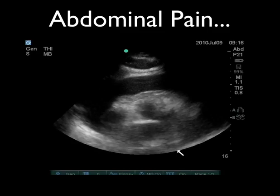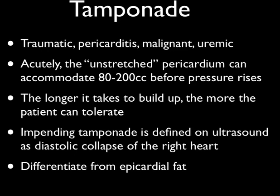What really is pericardial tamponade? Pericardial tamponade is when you have diastolic collapse of the right heart. During diastole, you would expect the heart to fill, but if it paradoxically collapses during diastole, that means there's so much fluid around the heart in the pericardium that it's causing the heart to collapse when it should be expanding. That's the sonographic definition. The clinical definition is large pericardial effusion plus hypotension or plus severe shortness of breath.